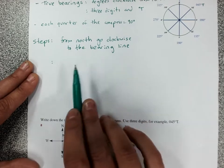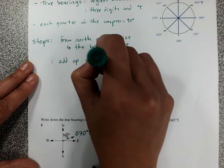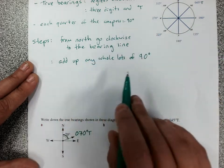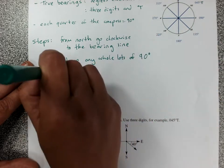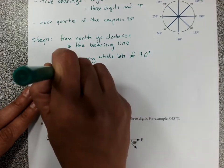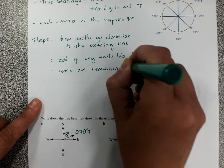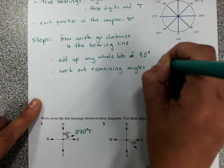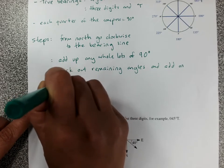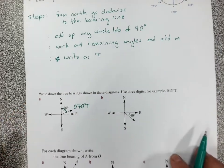You add up any whole lots of 90 degrees. Then work out any remaining angles and add them on. We'll go through an example where you see what I mean. And of course degrees T.